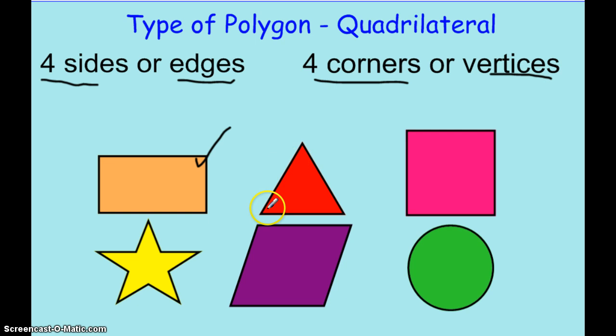This triangle has only 1, 2, 3 sides and 1, 2, 3 corners. It would not count as a quadrilateral. A circle has no corners, so we cannot count it as a quadrilateral.